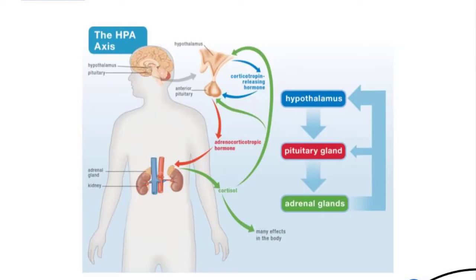That hypothalamus will then produce something called corticotropin-releasing hormone, or CRH for short. The CRH produced in your hypothalamus then travels — following that arrow along — to the anterior pituitary. From there, your anterior pituitary will decode what the CRH is communicating and create its own hormone called adrenocorticotropin hormone, or ACTH.